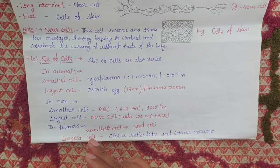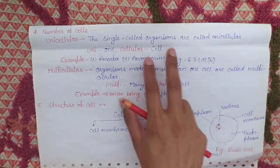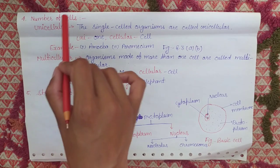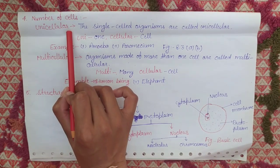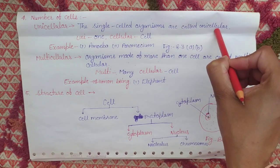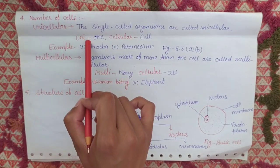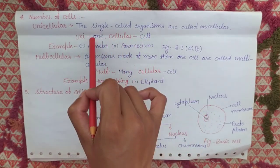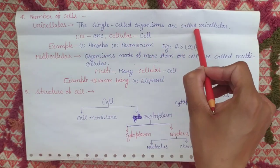After this we will start our fourth topic: numbers of cells. On the basis of number of cells, we will divide organisms into two parts: unicellular and multicellular. Unicellular means the single-celled organisms — those organisms made of only one cell are called unicellular. 'Uni' means one, and 'cellular' means cell.